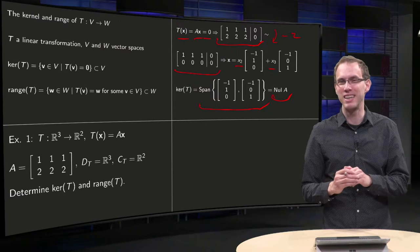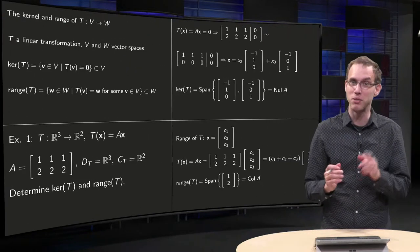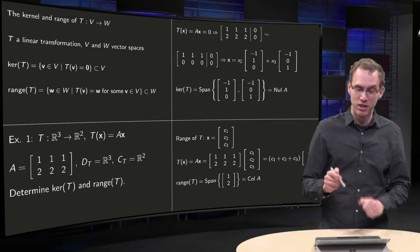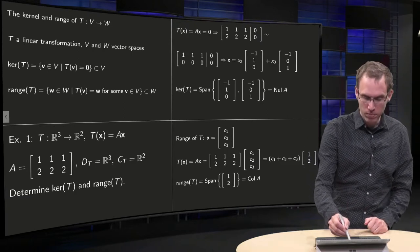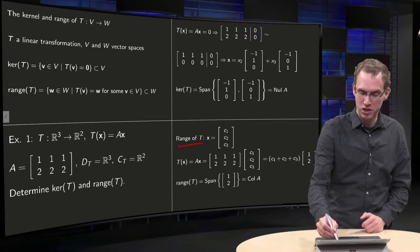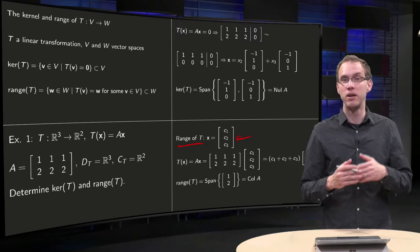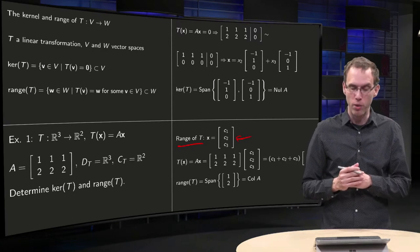Well, I think you can now already guess what the range will be, but let's check. The range of T, how can we find this? You take some general vector X consisting of C₁, C₂, and C₃, and we wonder where we get.